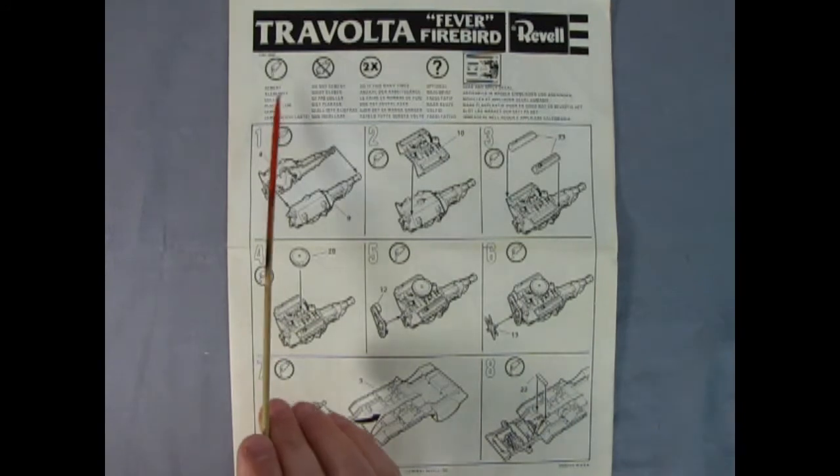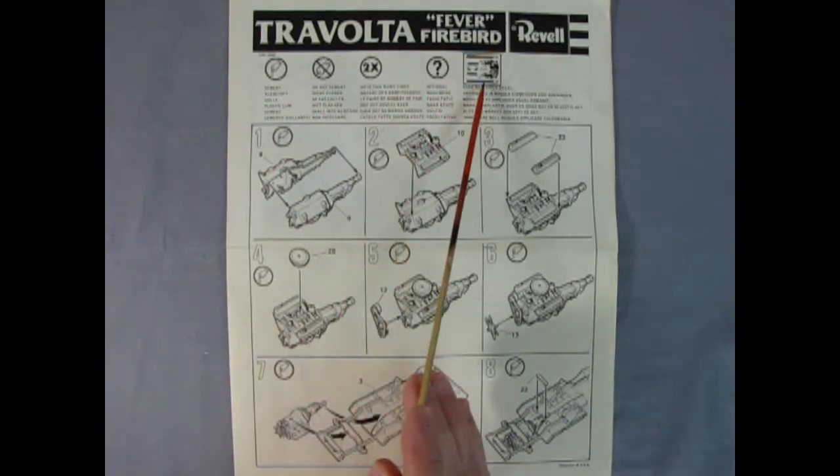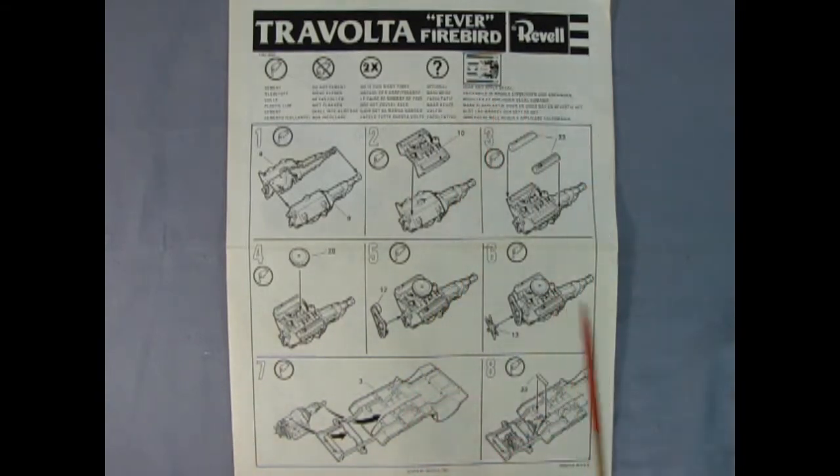Our instruction sheets are again the great big fold-out style. These are the different symbols for how to build your model and a little bit of instructions on our decal sheet. Boy, I could almost just pick this out right now as it is.